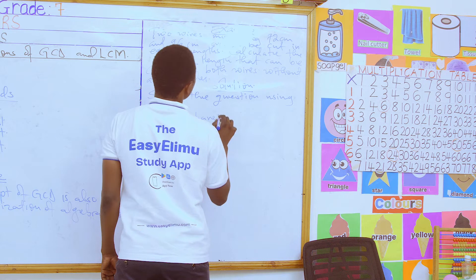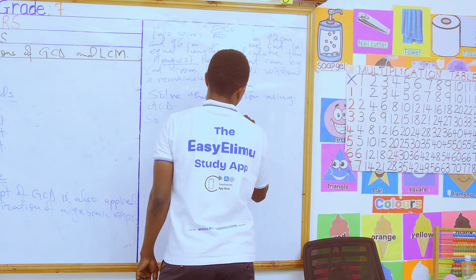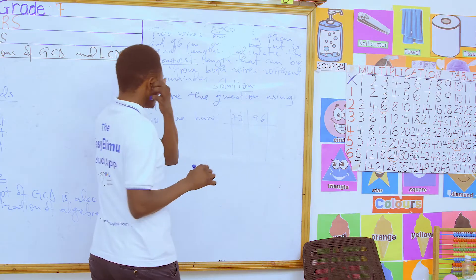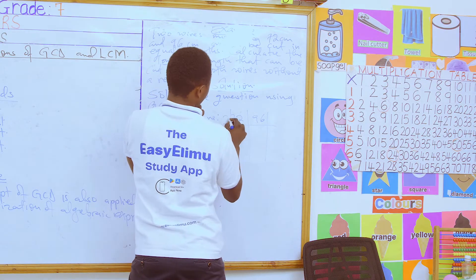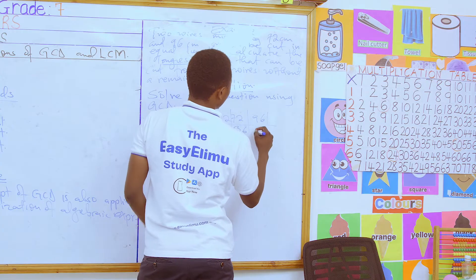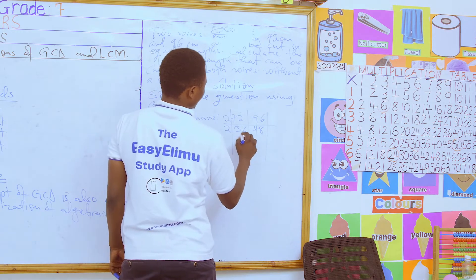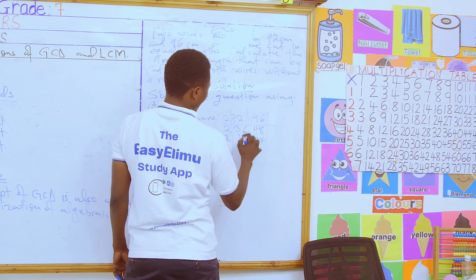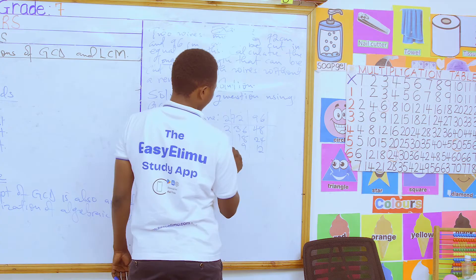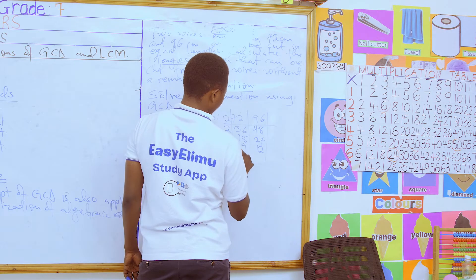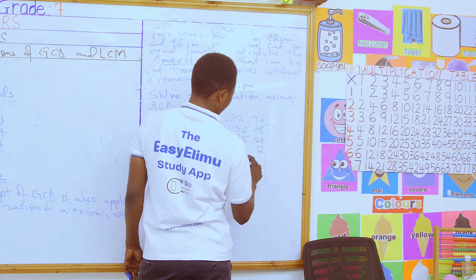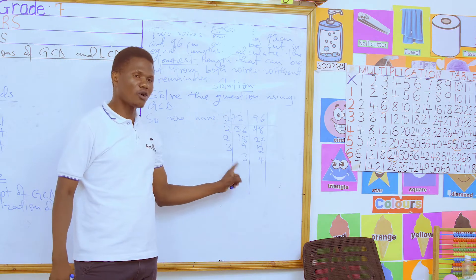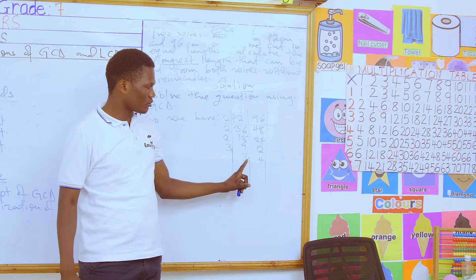We solve the GCD of 72 and 96. Starting with 2: 72 ÷ 2 = 36, 96 ÷ 2 = 48. Again with 2: 36 ÷ 2 = 18, 48 ÷ 2 = 24. Again with 2: 18 ÷ 2 = 9, 24 ÷ 2 = 12. Then with 3: 9 ÷ 3 = 3, 12 ÷ 3 = 4. At this point we have 3 and 4, and we do not have a common factor that can divide both 3 and 4.